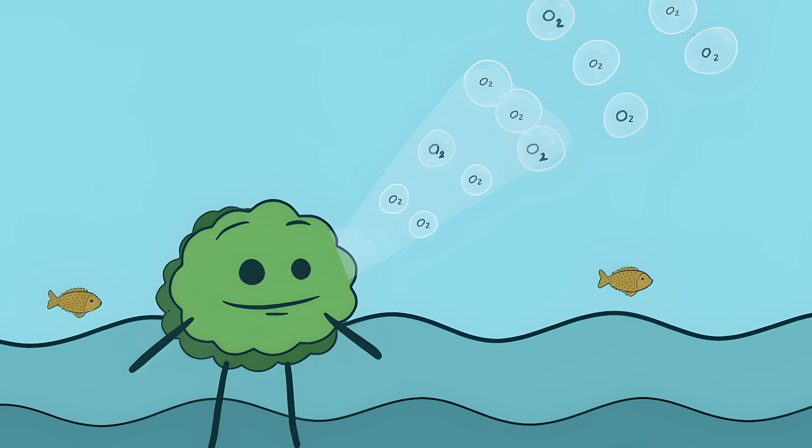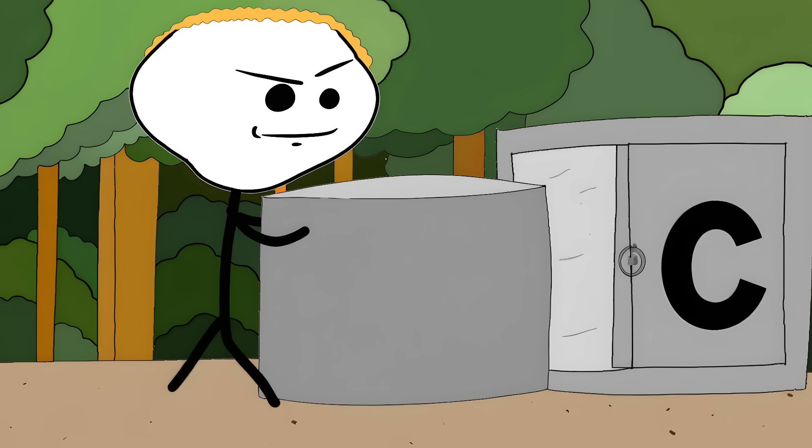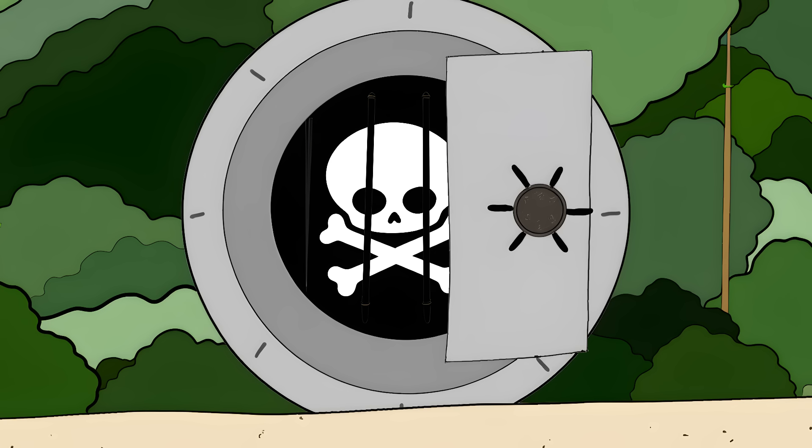Most of Earth's oxygen actually comes from tiny organisms in the ocean called phytoplankton. These microscopic overachievers are the real MVPs of oxygen production. The Amazon's real superpower isn't making oxygen. It's storing carbon. Think of it like Earth's biggest carbon vault. It keeps dangerous stuff locked away.